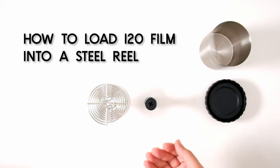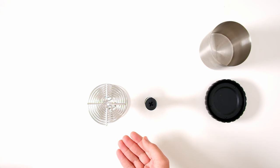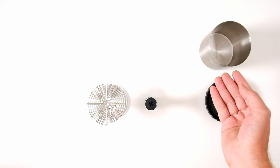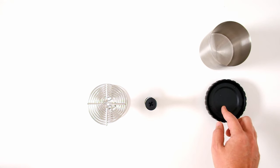So we've got our 120 or medium format film. We're going to load it onto the steel reel, then we're going to take that reel and put it in the tank and close the lid. And we're going to do most of this in the dark.